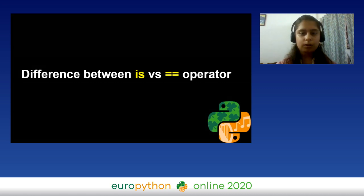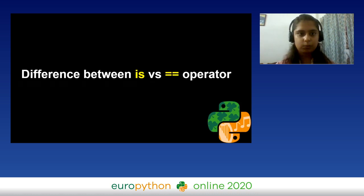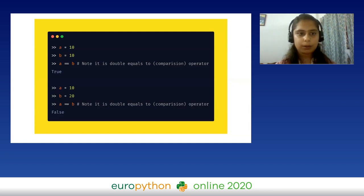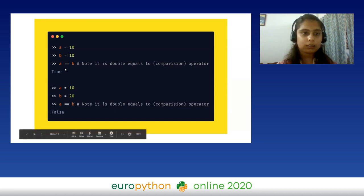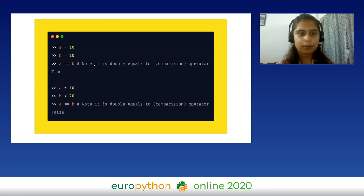Next, we cover what is meant by `is` versus the `==` operator. This is a confusing concept that is often used interchangeably — but it cannot be. There is a subtle difference. For example, if I initialize variable `a` and `b` both with value 10, then doing `a == b` returns `True`, because the comparison operator compares the values of the objects. As the values of `a` and `b` are both the same, the result is `True`. With values 10 and 20, the result is `False`.